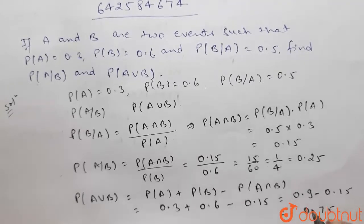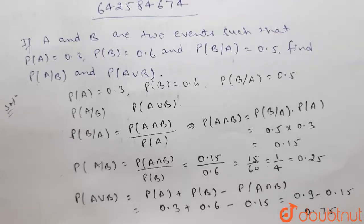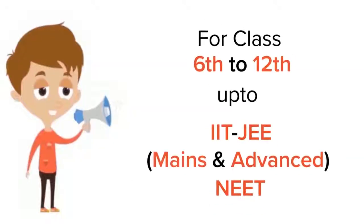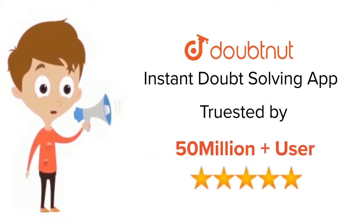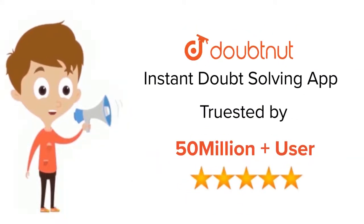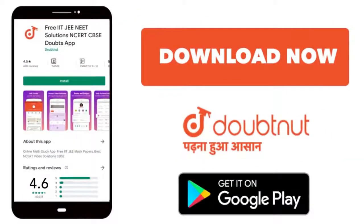Probability of A union B is 0.75. Thank you. For class 6 to 12, IIT JEE and NEET level. Trusted by more than 5 crore students. Download DoubtNet app today.